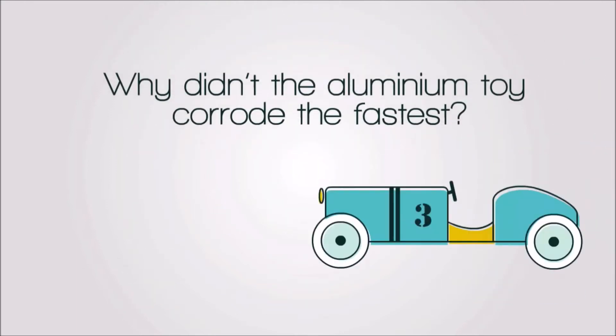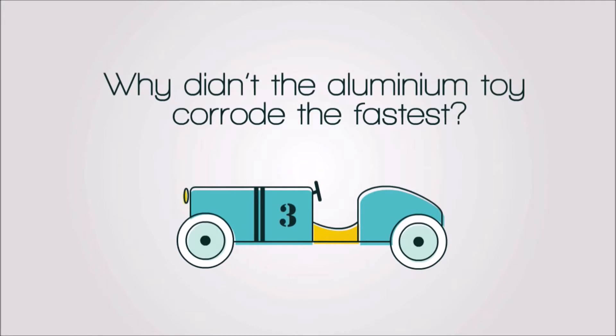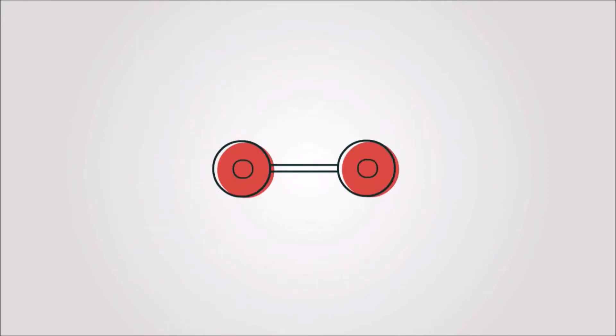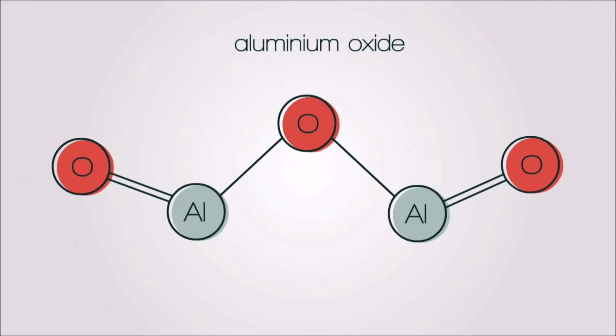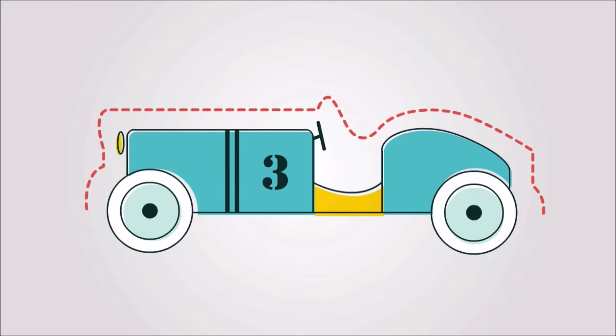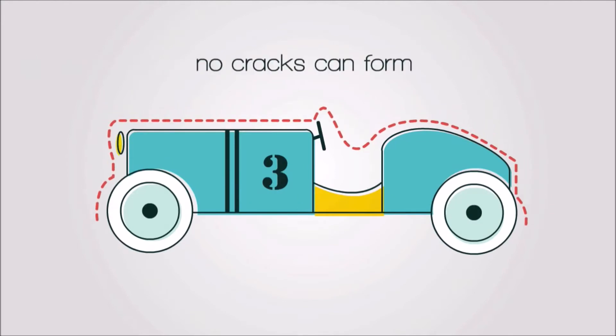But you may be wondering, why didn't the aluminum toy corrode the fastest? The truth is, the aluminum is more reactive than the iron, so it reacts fastest with the oxygen from the air, forming aluminum oxide. Aluminum oxide is very unreactive because, once the oxide layer is formed on the surface, it binds very tightly to the surface of the metal, so no cracks can form and cause further corrosion.